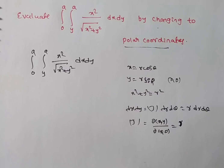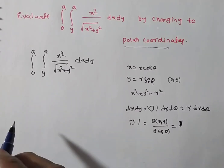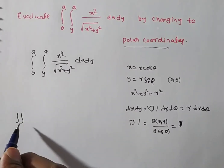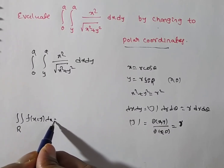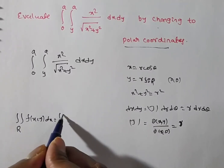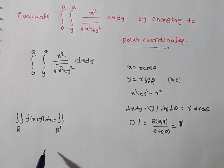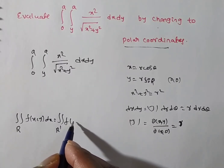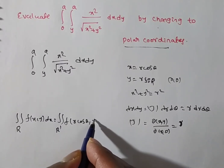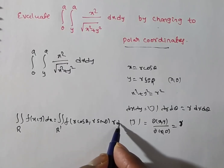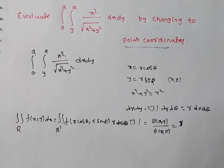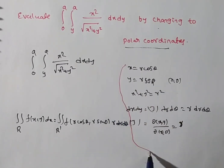This is the default rule: whenever a given problem is in Cartesian coordinates — the double integral over region R of f(x, y) dx dy — we convert it to polar coordinates by replacing x = r cos θ, y = r sin θ, and dx dy = r dr dθ. Is it clear how we have to convert this?